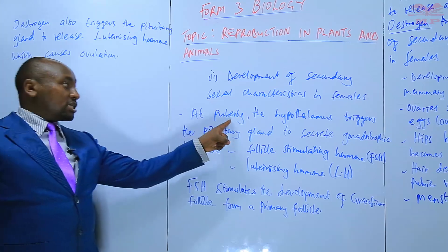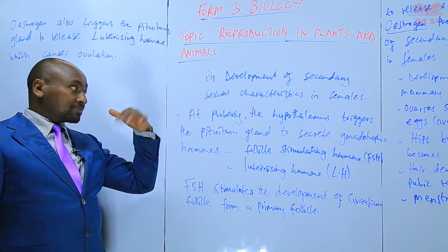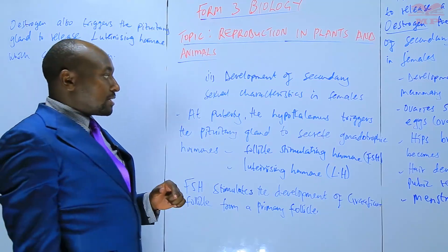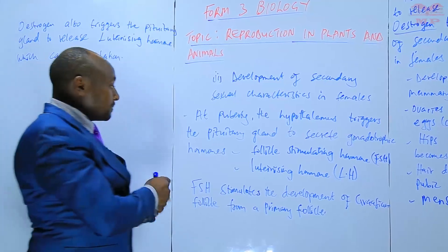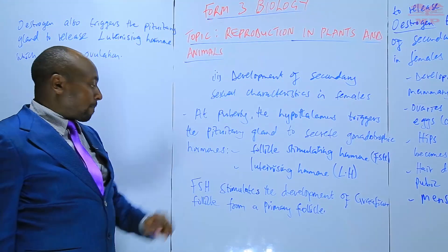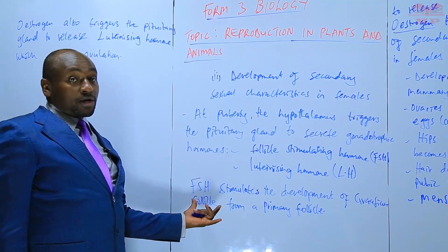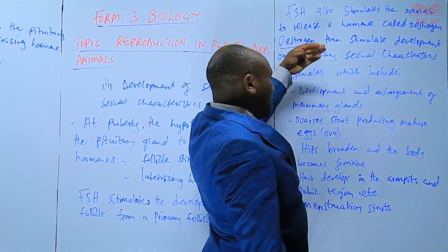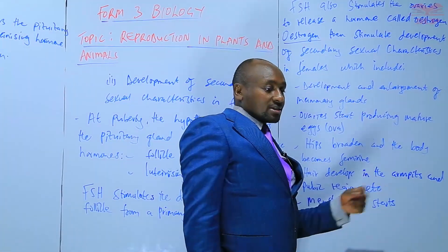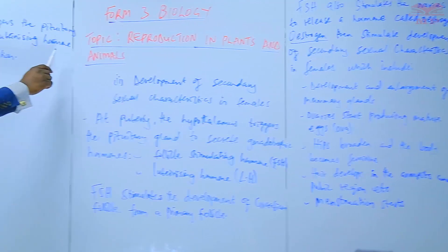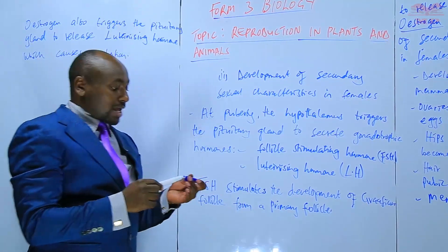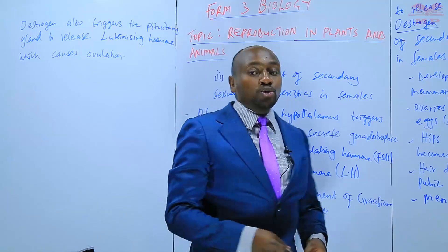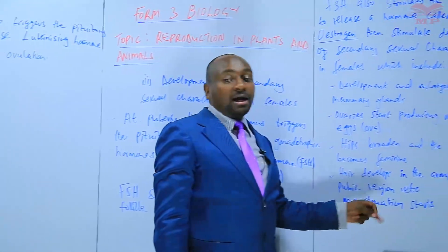That is a summary of how secondary sexual characteristics develop in females. It starts with the female reaching puberty; the hypothalamus detects this and sends an instruction to the pituitary gland to secrete gonadotrophic hormones — follicle stimulating hormone and luteinizing hormone. FSH stimulates the development of the Graafian follicle from primary follicles and also stimulates the ovaries to release estrogen. Estrogen causes development of secondary sexual characteristics and also triggers the release of luteinizing hormone, which causes ovulation.